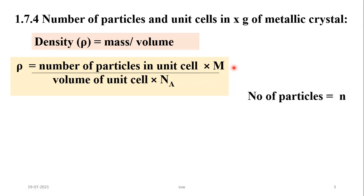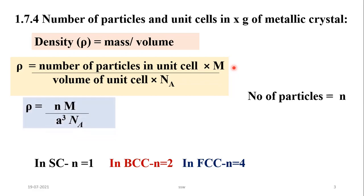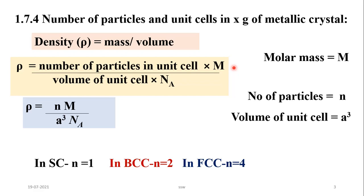Here N means number of particles. You know that in simple cubic, N is equal to 1; in body-centered cubic unit cell, N is equal to 2; and in face-centered cubic unit cell, N is equal to 4. So the relation is: rho, that is density, is equal to N into molar mass M, divided by A cubed — that is volume of unit cell — into Avogadro's number N_A.